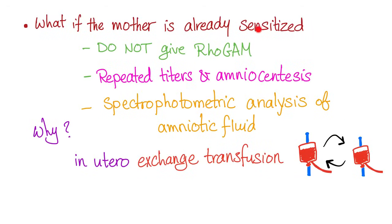If the mother is already sensitized, don't give her RhoGAM. We repeat antibody titers and amniocentesis to make sure the level of antibodies in her blood or in the fetal blood are within normal limits. We also do spectrophotometry — analyzing the amniotic fluid for bilirubin. If there is an excess amount of bilirubin, the baby is in danger.